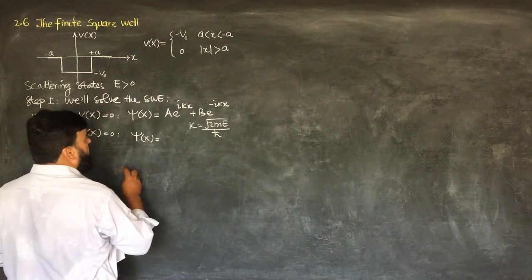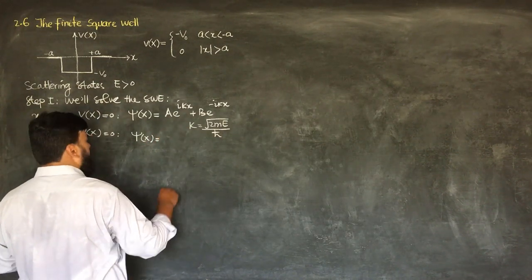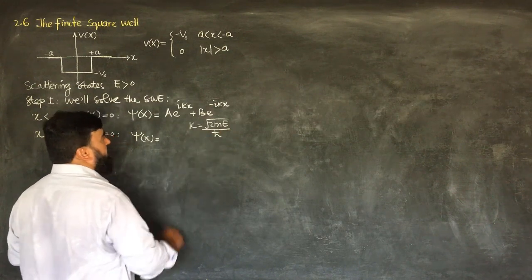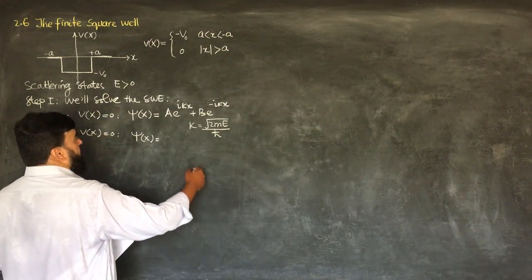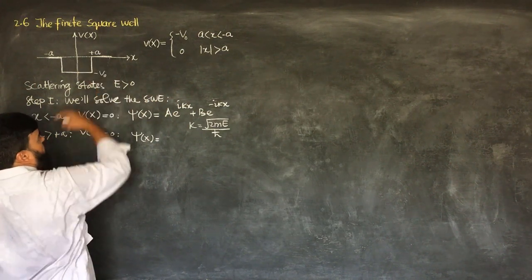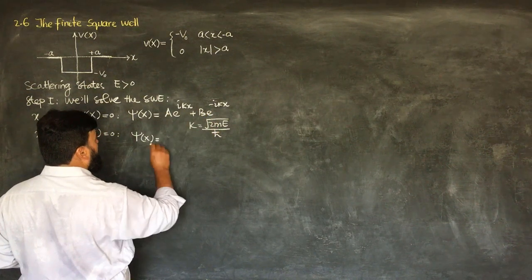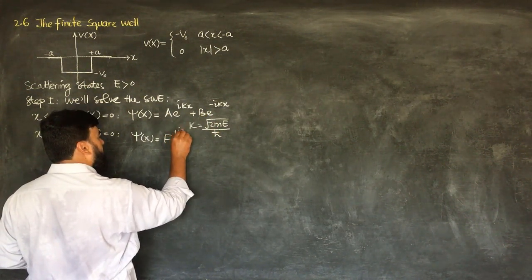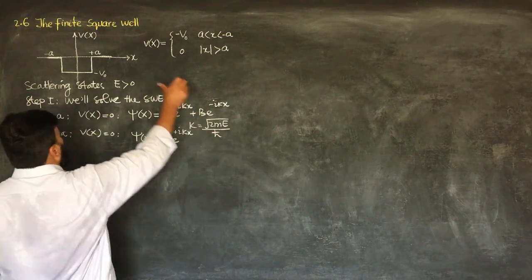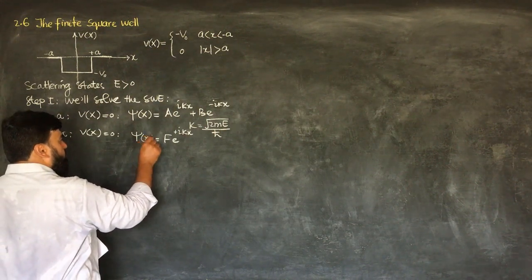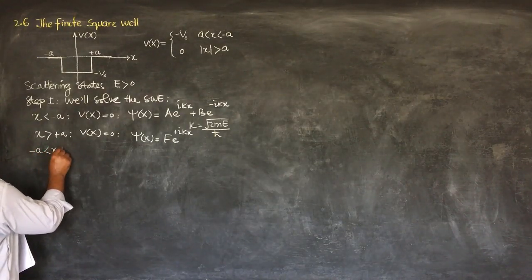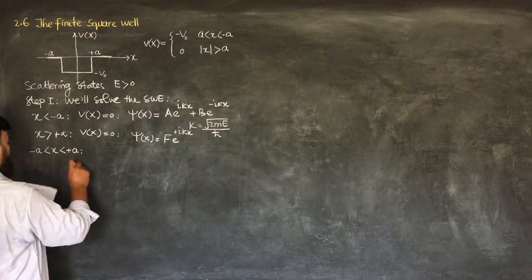For x > +a, ψ(x) will again take the same form but with different constants: Fe^(ikx) + Ge^(-ikx). However, since there is no incidence from this side, we set G = 0, and only Fe^(ikx) survives.